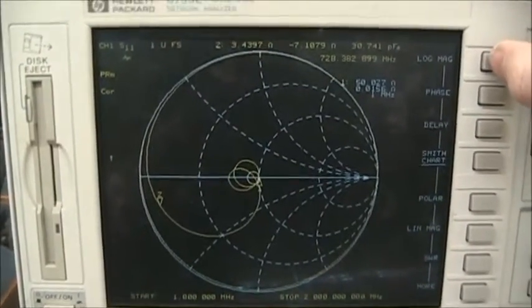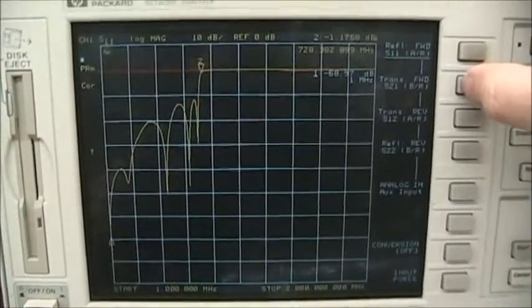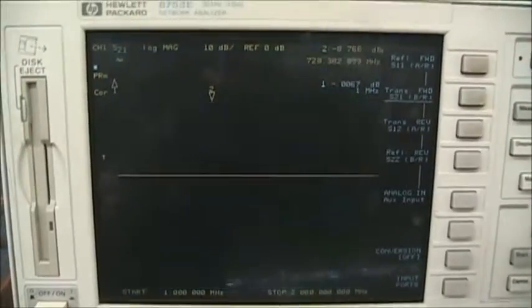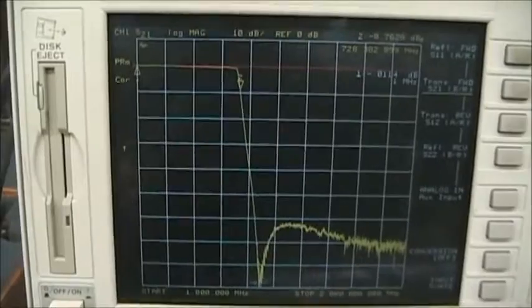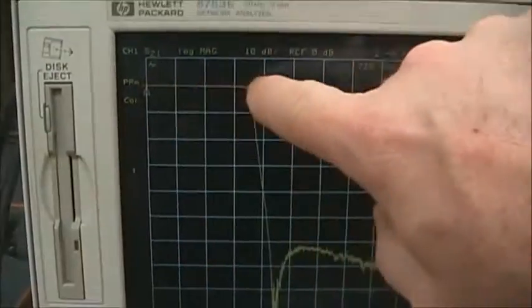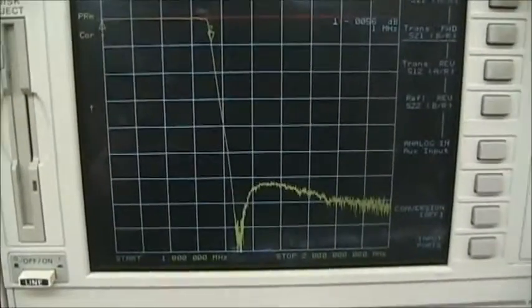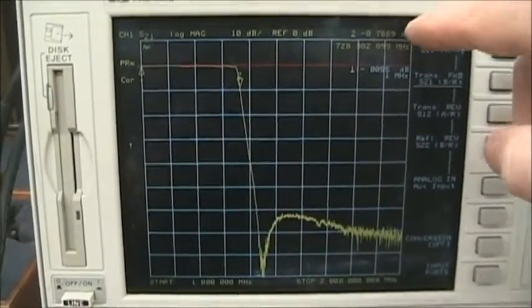Going back to log magnitude, now we want to look at the S21 display. Remember, S21 is the output over the input. So this is our classic filter type display, the low-pass filter.